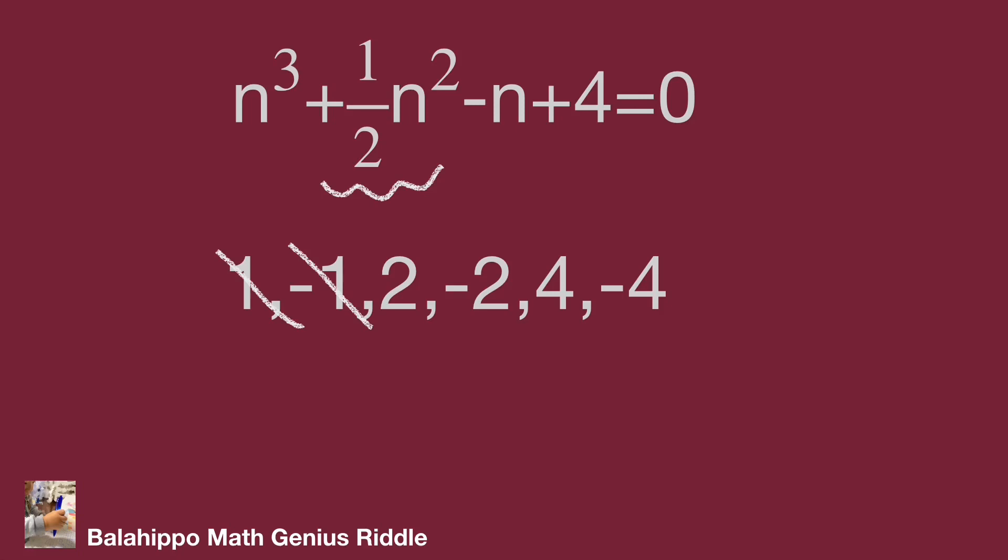Therefore, we narrow down the number group to 2, minus 2, 4, and minus 4. Because the possible numbers are not so big, substitute these numbers into the equation and find the correct one.